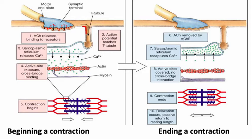To end a contraction, a number of things have to happen. The acetylcholine needs to be removed from the synapse. There are two ways that the synapse is cleared. One is diffusion — the acetylcholine will diffuse away from the synaptic cleft. But the more important mechanism involves an enzyme called acetylcholinesterase.